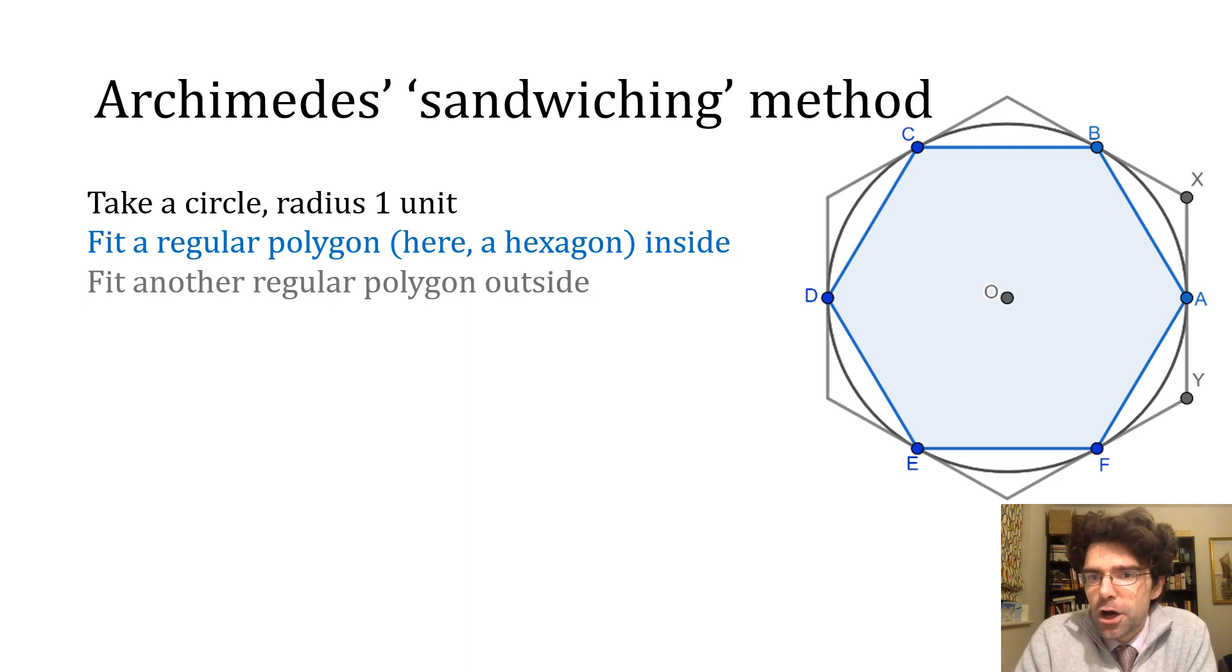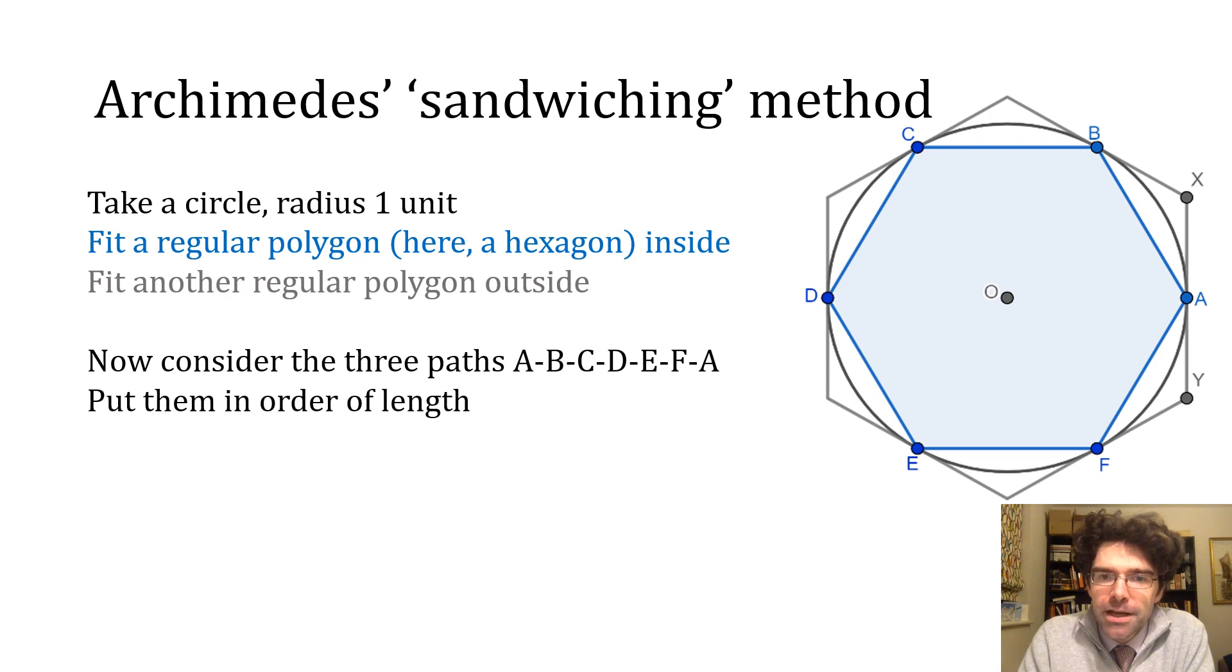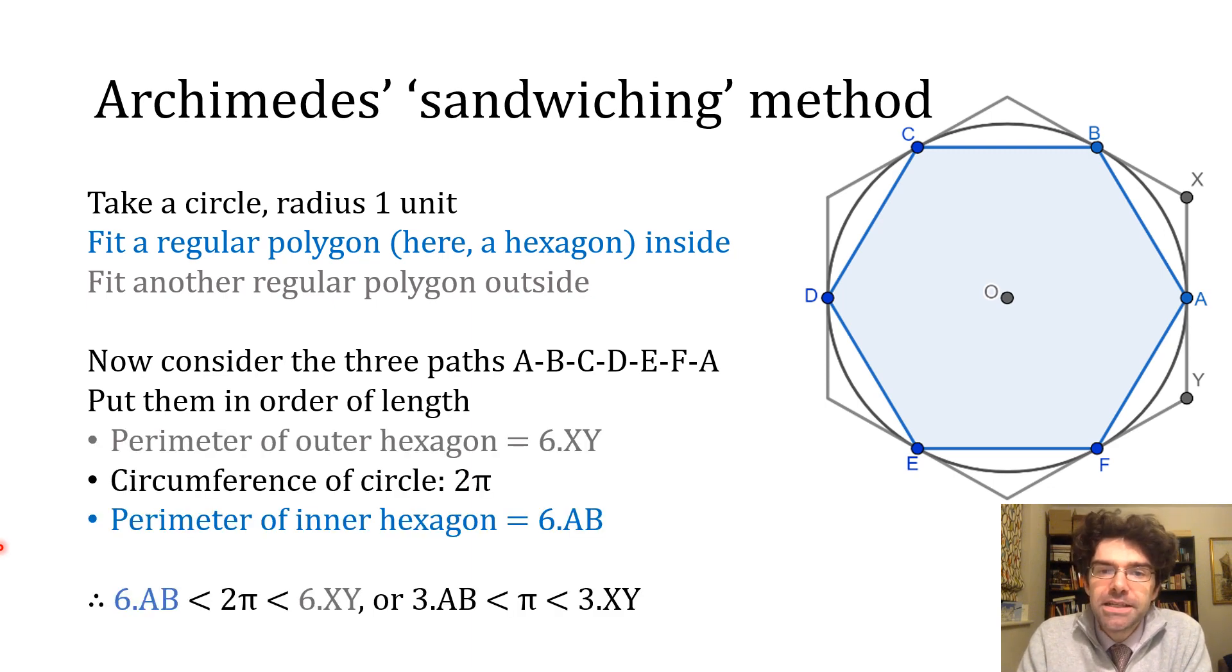Now if you imagine this was some sort of overhead map of a system of roads and you needed to work out what possible routes there were for getting from A through B, C, D, E, and F and back to A, and you tried to put them in order of length, then hopefully you would agree that the fastest route would be to go straight from A to B, straight from B to C, and so on, in other words to take the inner hexagon. The circular route takes you slightly off course but not too much, and the outer hexagon is the longest route because it takes you furthest away from that direct path between each pair of points. And because it's quite easy to express the perimeter of the hexagons and the circumference of the circle, this gives you a way of approximating π.